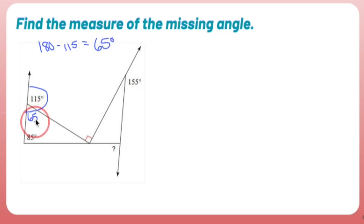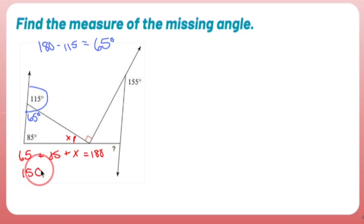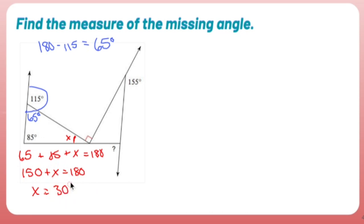Working left to right, I can find the next angle using the interior angle sum: 65 plus 85 plus X equals 180. Combining 65 and 85 gives 150, so 150 plus X equals 180. Subtract 150, and X is 30 degrees.